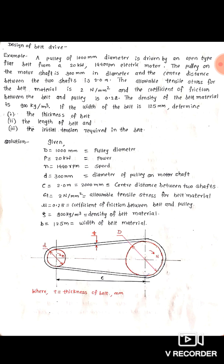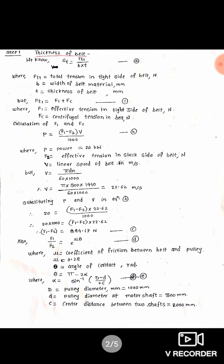In step number one we want to find the thickness t. We use the relation: sigma t equals total tension in tight side of belt divided by width of belt into thickness of belt. From this relation we get the value of thickness t. For calculating the total tension in the tight side of belt, indicated as ft1, the formula is ft1 = f1 + fc, where f1 is the effective tension in the tight side and fc is the centrifugal tension.